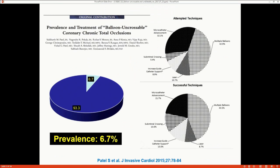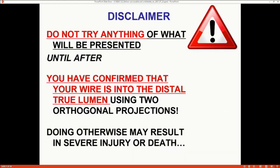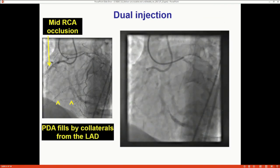In CTO PCI, this is found in about 6% to 9% — from an early single-center series from Dallas — and in a multi-center registry it's about 9%. The challenge with balloon uncrossable is that it can be fairly difficult to treat. But before you treat this, the very first thing is to make sure your wire is distal in the true lumen, because if it's not, very bad things can happen.